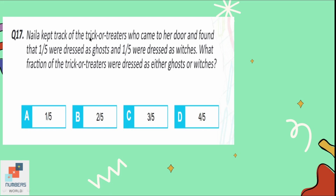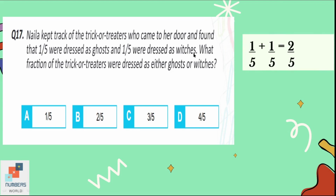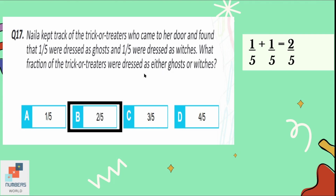Question number 17: Naila found that 1/5 of trick-or-treaters were dressed as ghosts and 1/5 were dressed as witches. What fraction were dressed as either ghosts or witches? Adding the fractions: since the denominators are the same, we add the numerators: 1 + 1 = 2, and the denominator remains 5. The answer is 2/5. Option B is correct.